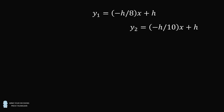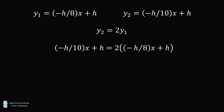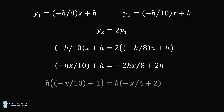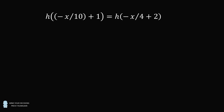Let's solve this algebraically. The second candle is exactly twice the height of the first candle, so y2 is equal to 2y1. We can substitute in and then simplify each side of the equation. From here, we can factor out an h term from each side. Since each side has a factor of h, the h will cancel out, so it doesn't depend on the initial height of the candles.